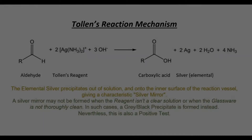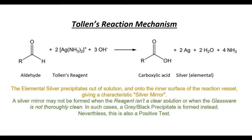When Tollens reagent is allowed to react with an aldehyde or an alpha hydroxy ketone, the diamine silver complex oxidizes the aldehyde into its corresponding carboxylate ion. In the process, the diamine silver complex is reduced to elemental silver and aqueous ammonia. The elemental silver precipitates out of solution onto the inner surface of the reaction vessel, giving a characteristic silver mirror.